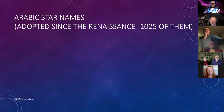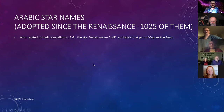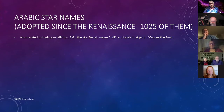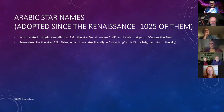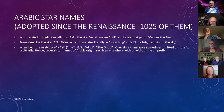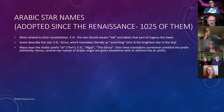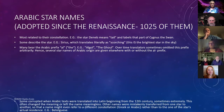When you look at the modern sky, you're looking at Arab star names for all the brightest stars — the ones you see with the naked eye. Most are related to their constellation. For example, Deneb means 'the tail' and it's part of the constellation Cygnus the Swan. Some describe the star: Sirius translates literally as 'scorching,' and it is the brightest star in the sky. Many bear the Arab prefix 'al,' meaning 'the.' Over time, some translators omitted this prefix, so several star names of Arabic origin appear with or without it.